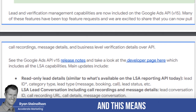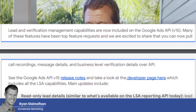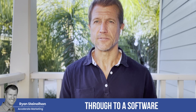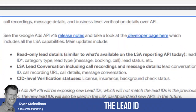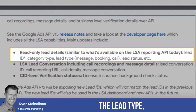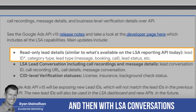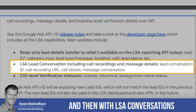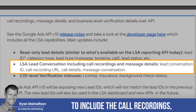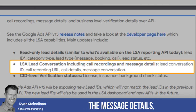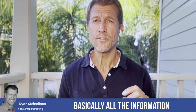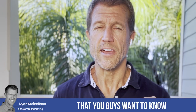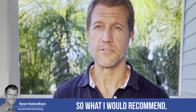There's API updates, and this means we can now actually pass through to a software like the one that we're developing: the lead ID, the category type, the lead type, lead status, and then with LSA Conversations, we're going to be able to include the call recordings, the message details, the call details, the message conversation — basically all the information that you guys want to know about your calls and your messages.